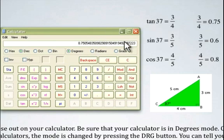Now if we clear this and we're going to check out the sine ratio, we put in 37, click sine, and we get an answer that's very close to 0.6. And 3 over 5 is equal to 0.6.